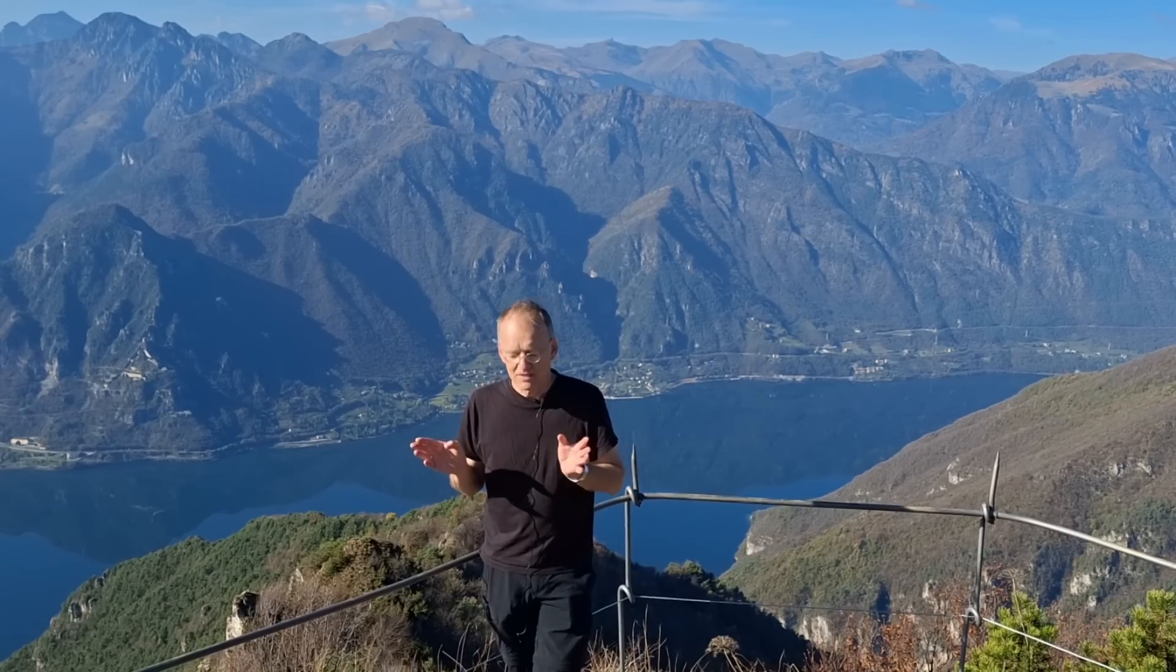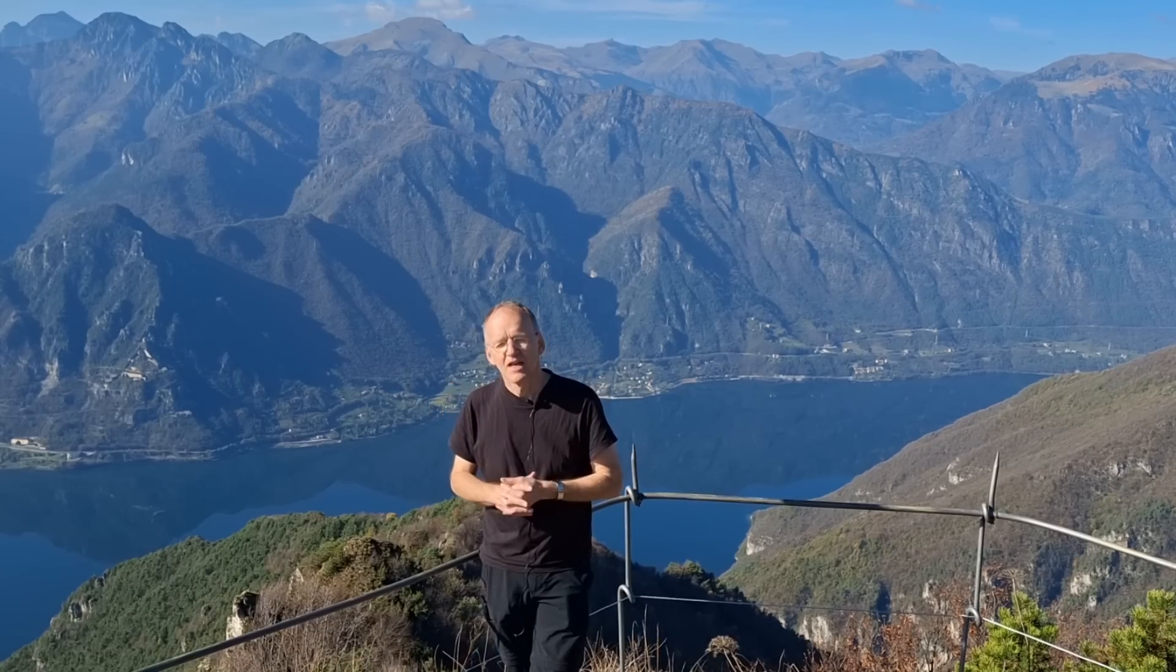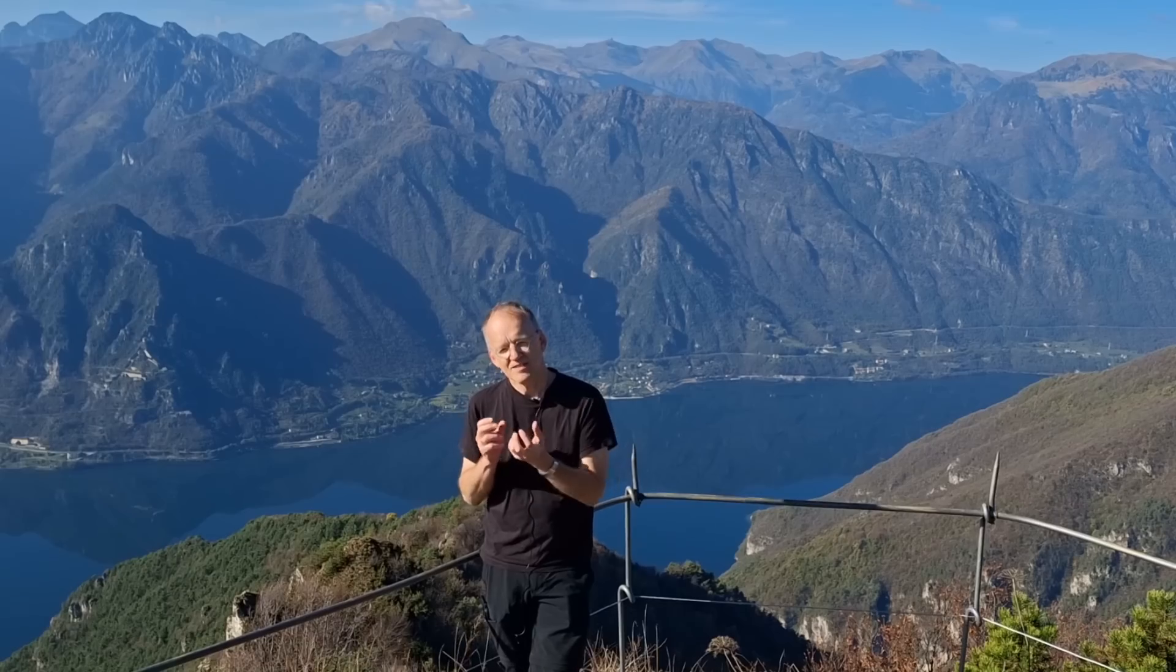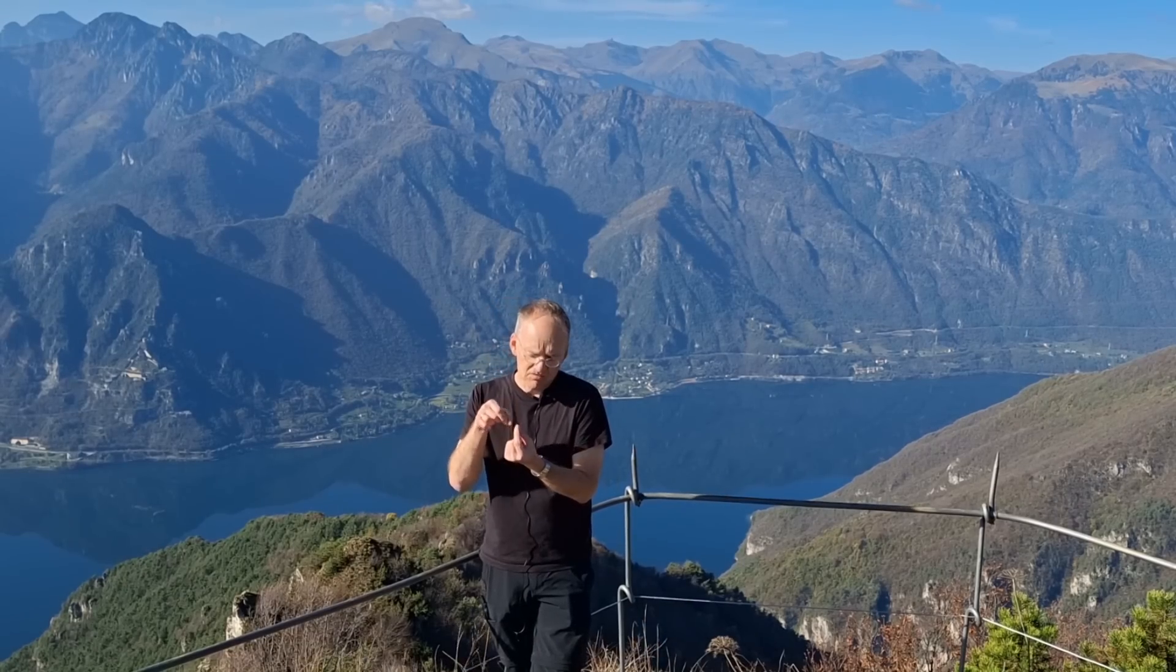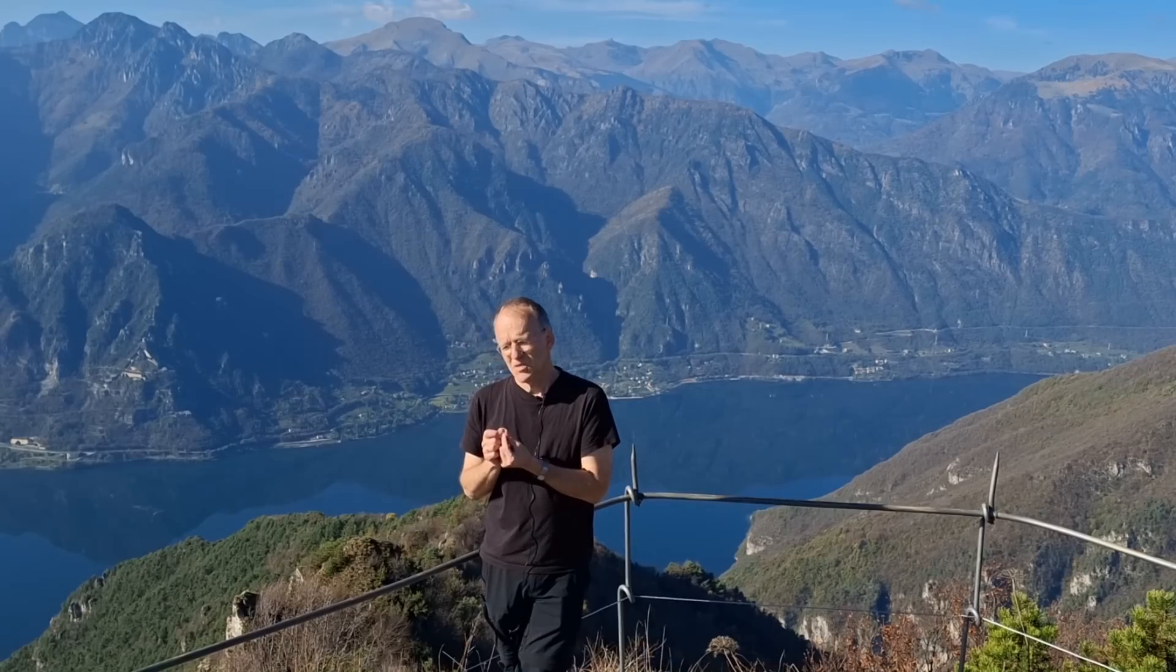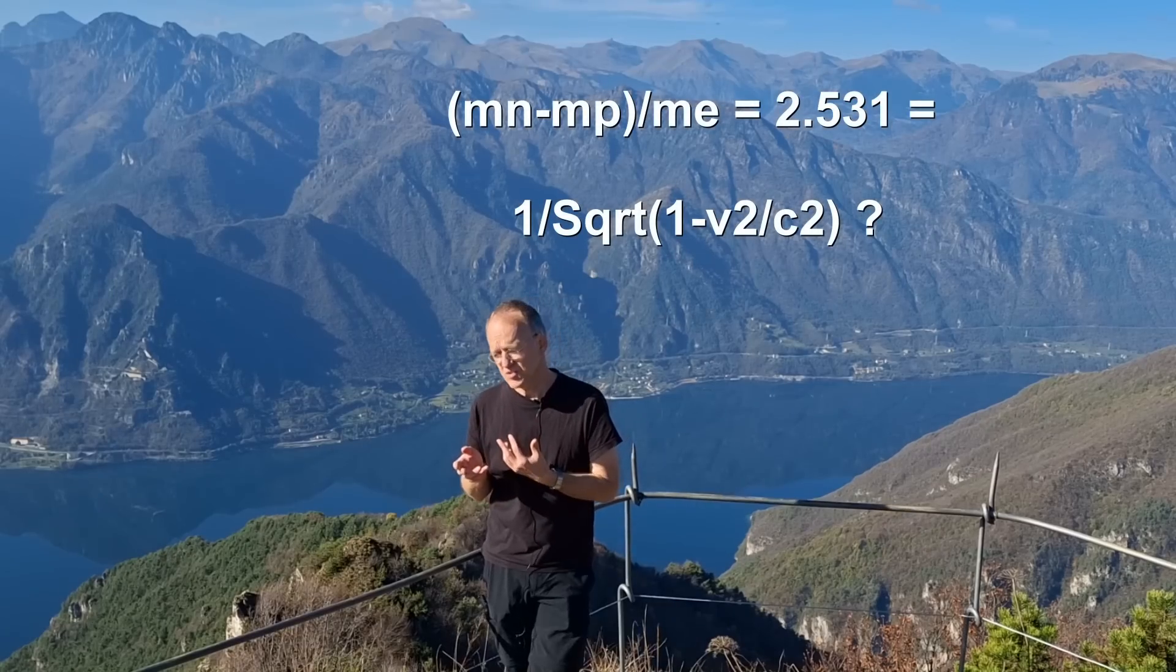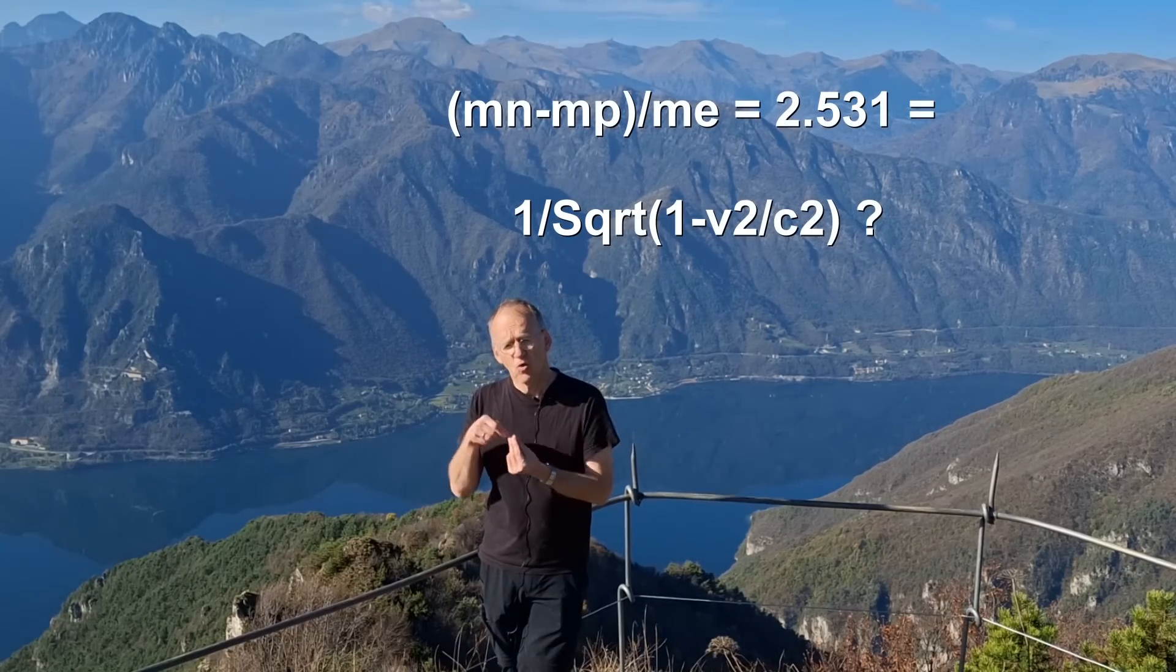That's very speculative and certainly against all contemporary understanding. But what about interpreting the neutron as a bound state of electron-proton, just the electron surrounding it at a much closer distance? This 2.53 you could interpret as the relativistic gamma factor of a much faster orbiting electron.